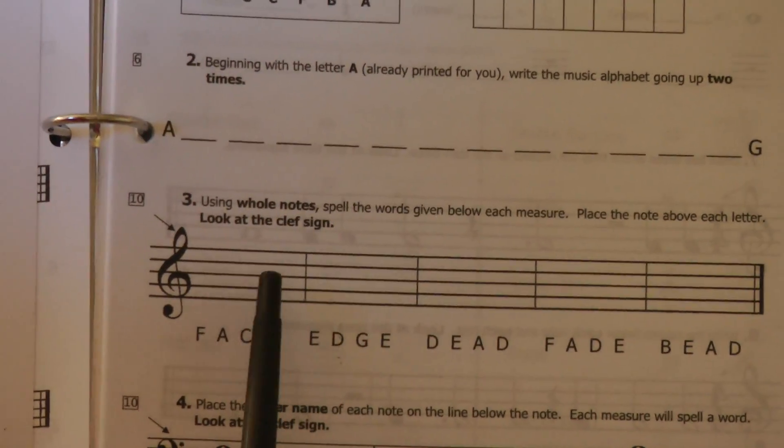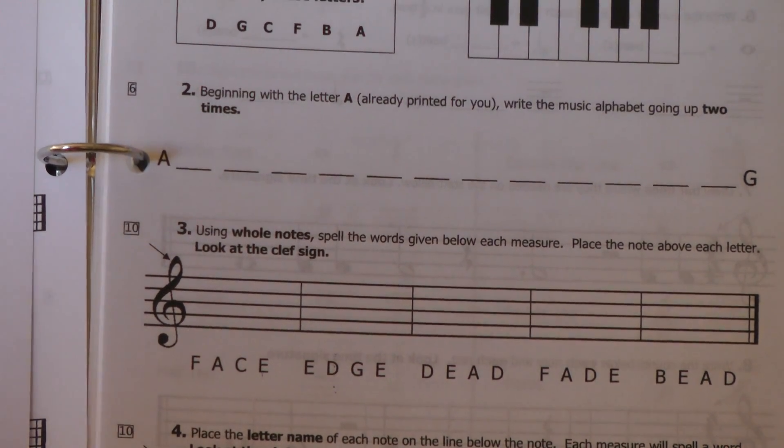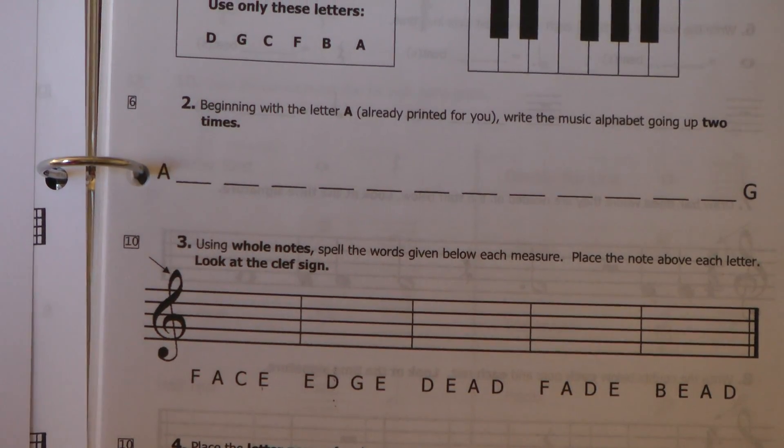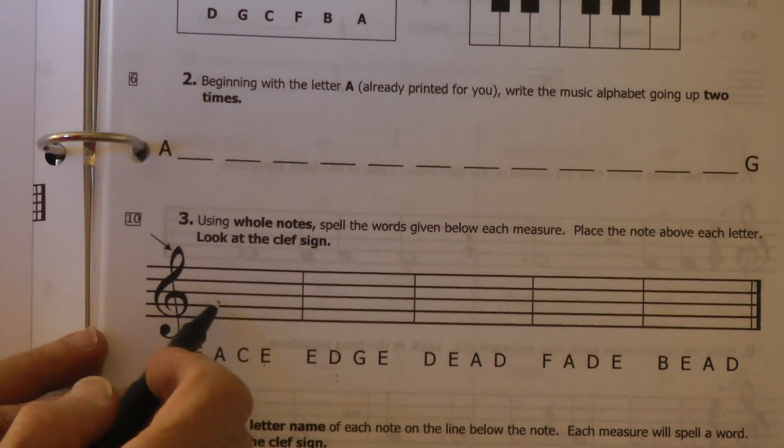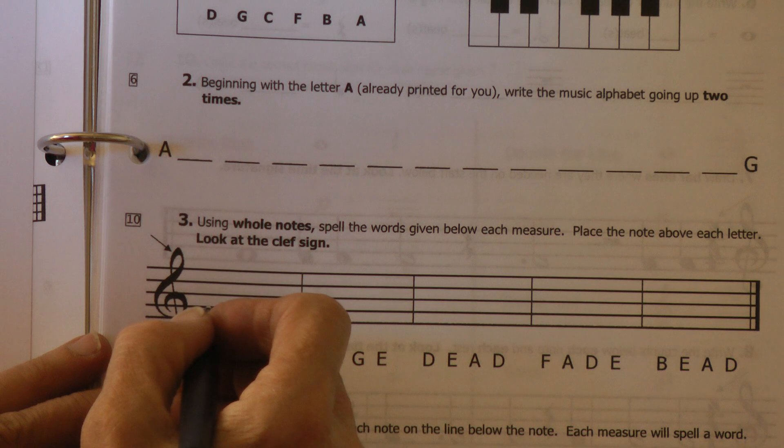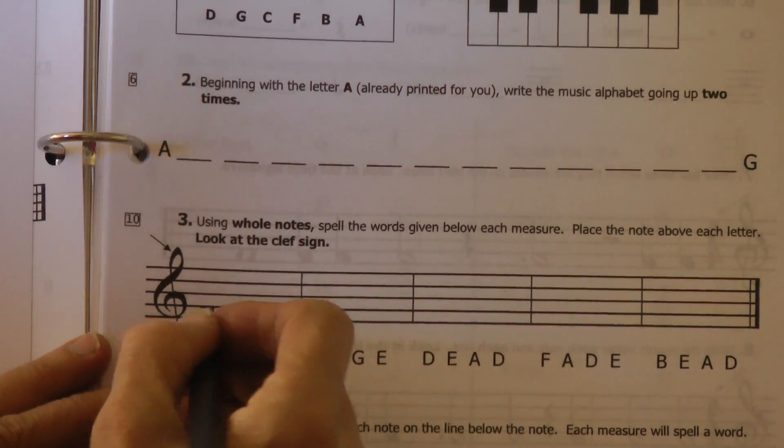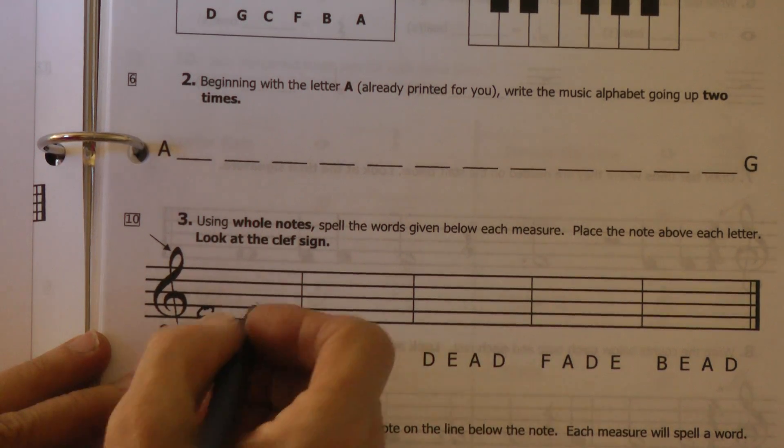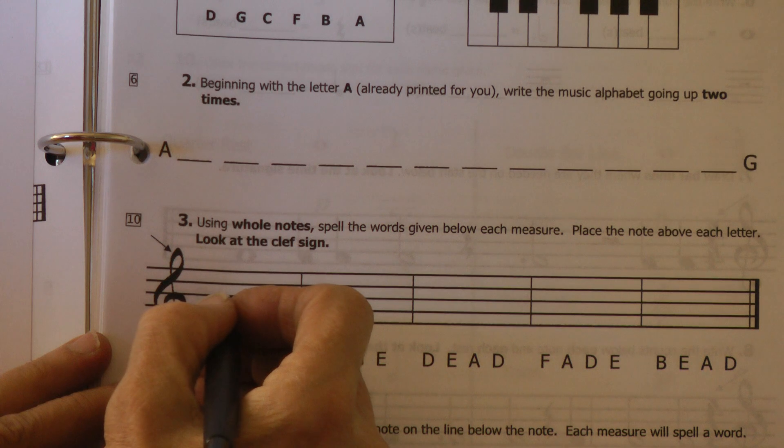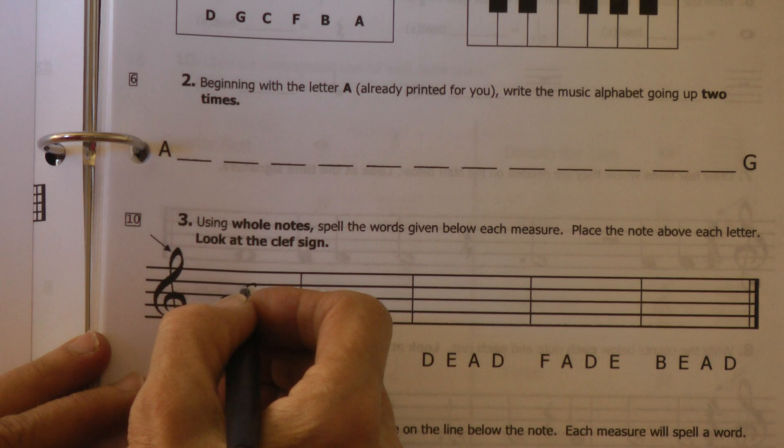They want you to use only whole notes. And be sure that you write your whole note above the letter, so it's spaced out, just like you see music in your book. And when you make a nice whole note, be sure you fill the space, top line to the bottom line. There's F, A is above it, and C is above it.